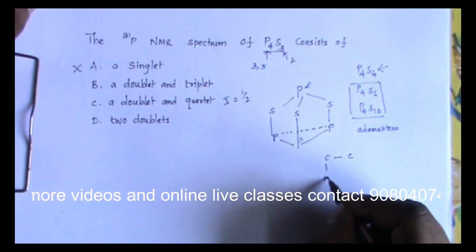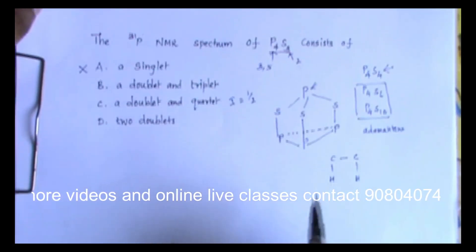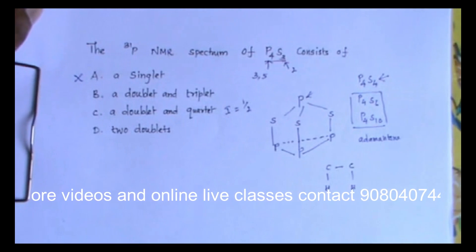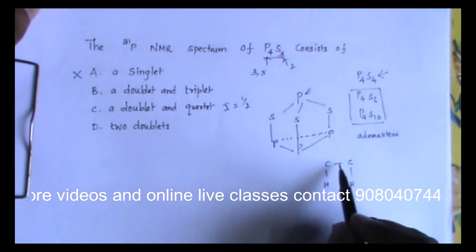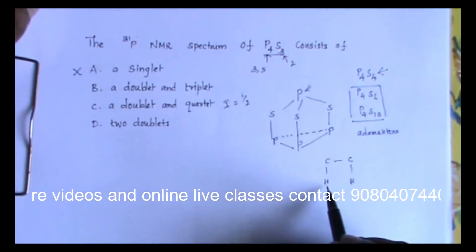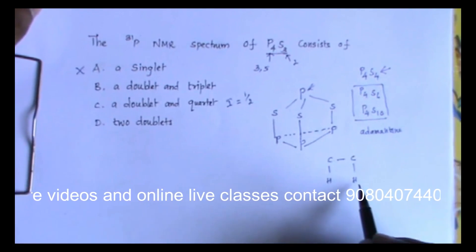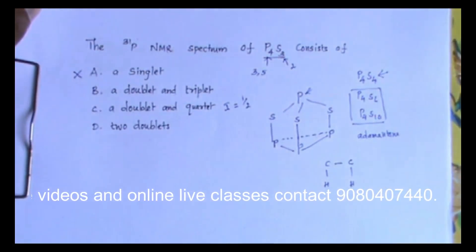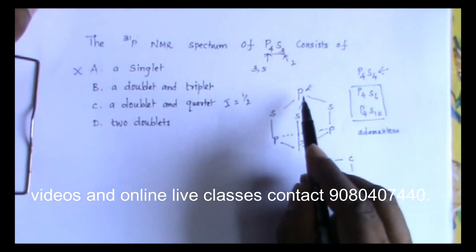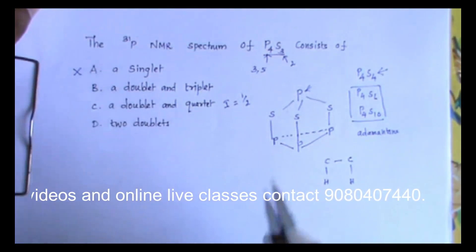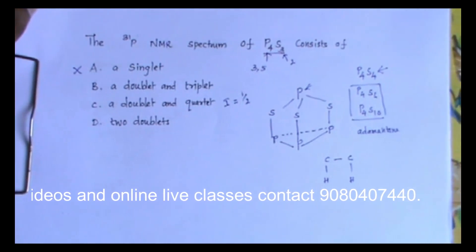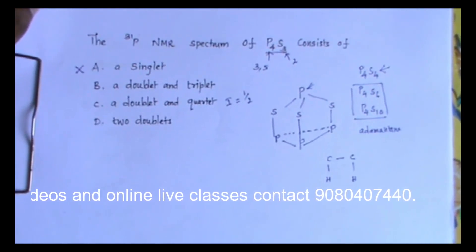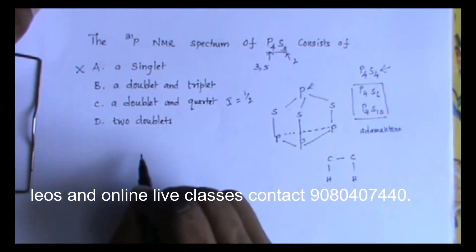They are only two bonds away from this, so this phosphorus atom can split this signal. Similarly, this signal will be split by this phosphorus atom. In the case of proton NMR, the hydrogens will be three bonds away, one, two, and three, yet the signal of this will be split by this. Here they are only two bonds away, so we can expect this signal to be split by this phosphorus and vice versa.